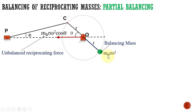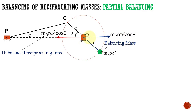The balancing mass creates a centrifugal force mrω². This centrifugal force can be divided into two components. One is the horizontal component, which is mrω²cosθ, because this angle is theta. So these two angles are the same.